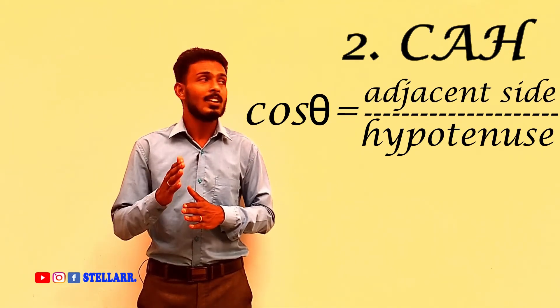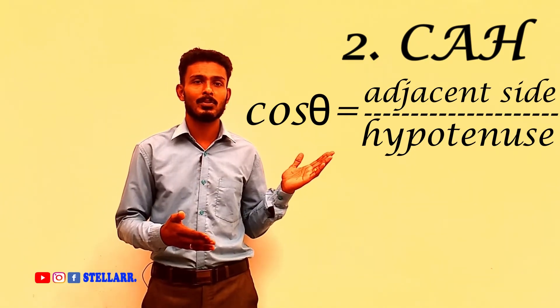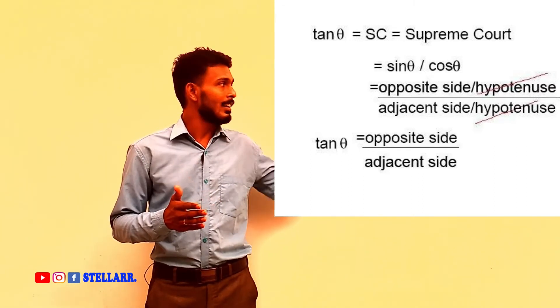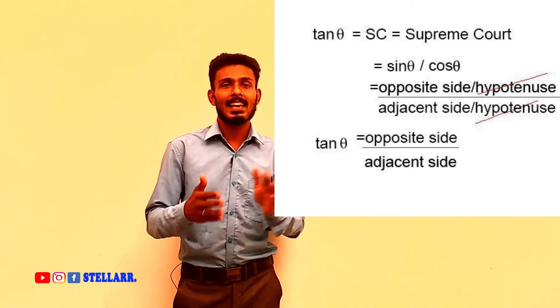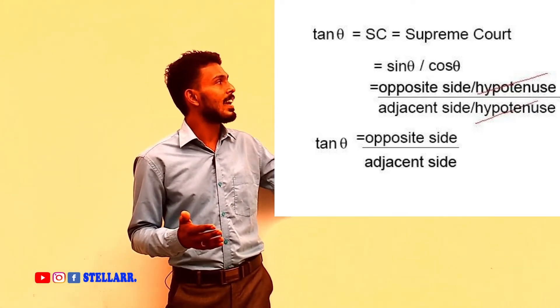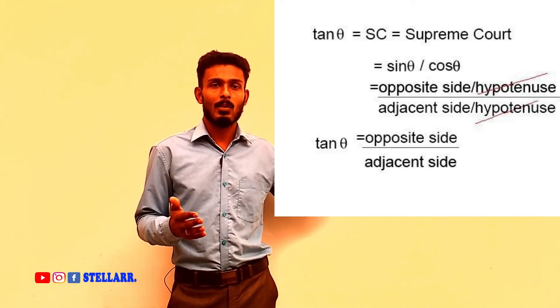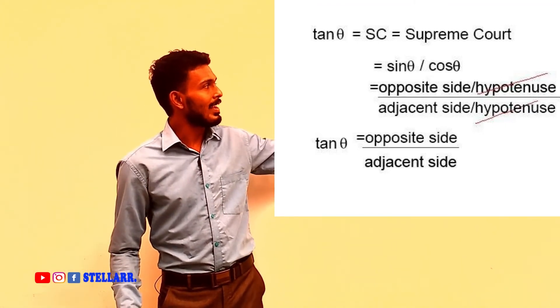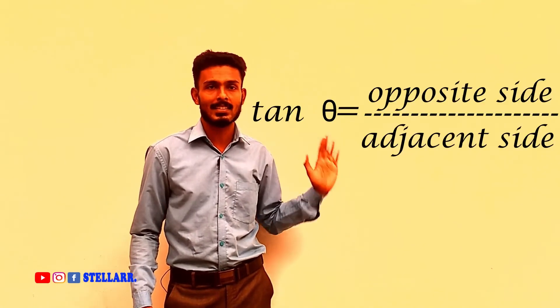Then, CAH. That is, cos theta. Cos theta is equal to adjacent side by hypotenuse. Then, tan theta. Tan theta is nothing but sin theta by cos theta. Just remember, SC as supreme court. That is, sin theta we are getting as opposite side by hypotenuse, then divided by cos theta which is adjacent side by hypotenuse. While simplifying, the hypotenuse gets cancelled and we get tan theta equals opposite side by adjacent side.